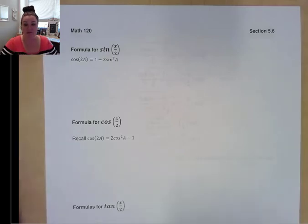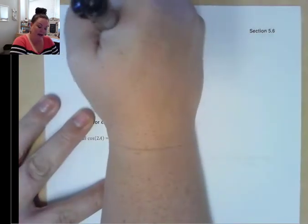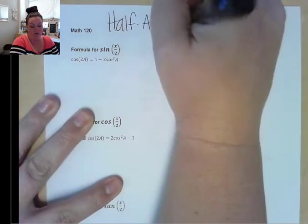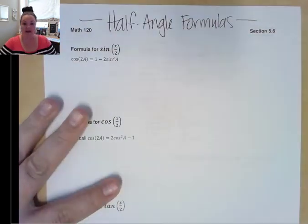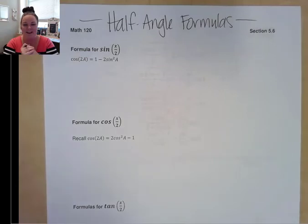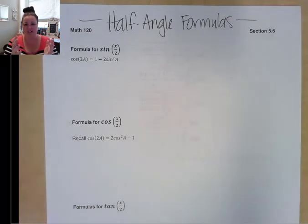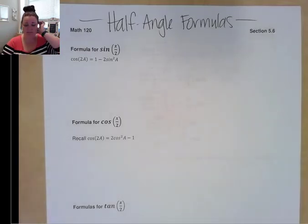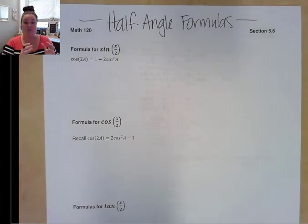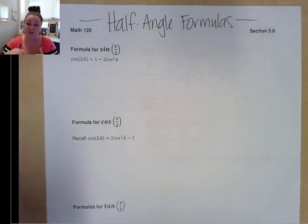Okay, here we go. This is section 5.6 and these are our half angle formulas. In section 5.5 we went over the double angle formulas, which really didn't give us anything new. If I say cosine of 2a, that's just addition — being able to write that in a different way. The reason we care about those double angle formulas is because we can use them to come up with half angle formulas, which is what we're doing today.